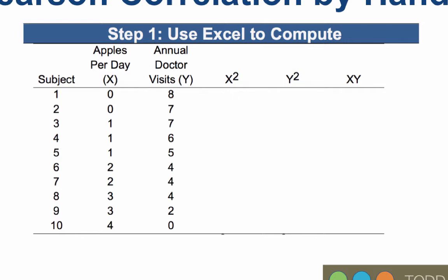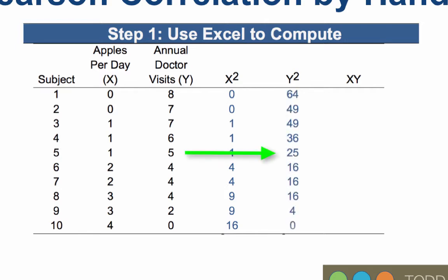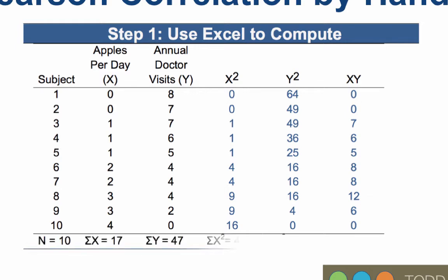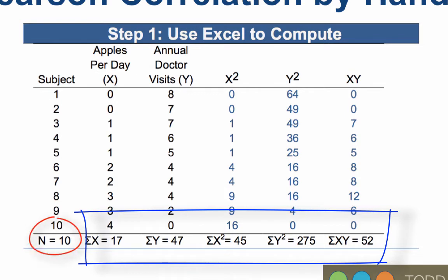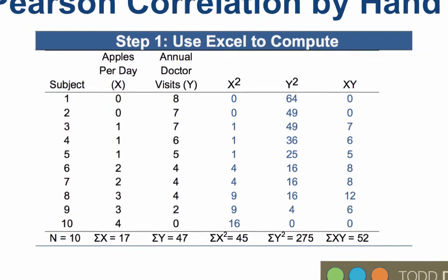We begin by squaring the x values — take each x value, square it, and add it to the x squared column. Then we create the y squared column using the same procedure. Finally, we multiply each x value by its corresponding y value, always working across rows, to create the x times y column. Now that all columns are completed, we add up each one. This gives us the sum of each column and n equals 10 for the number of pairs of scores. We will transfer these values to the formula.